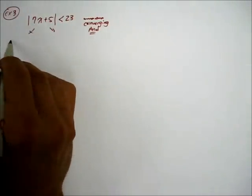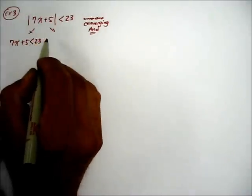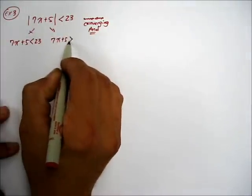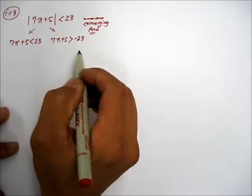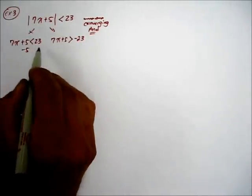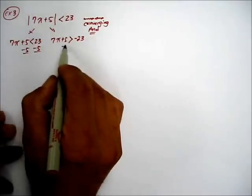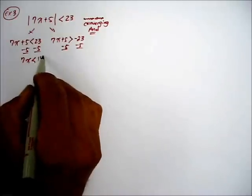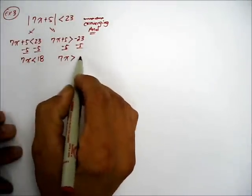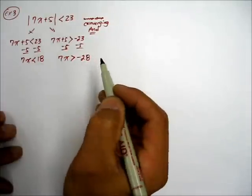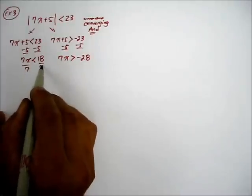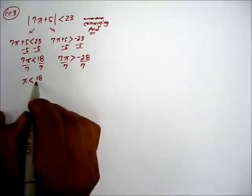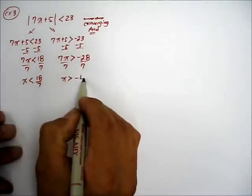Keeping that in mind, here's the way you set it up: 7x + 5 < 23, and 7x + 5 > -23. We're going to solve this just like the equation using the subtraction property of inequality. So you end up with 7x < 18, and here 7x > -28. Solving for x by dividing the coefficient 7 from both sides: x < 18/7, and x > -4.